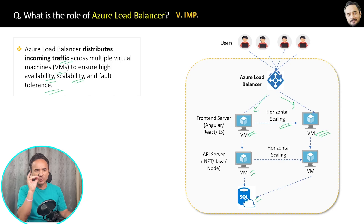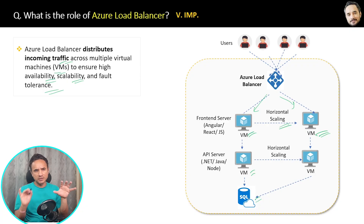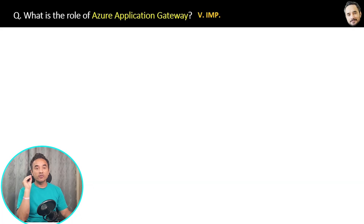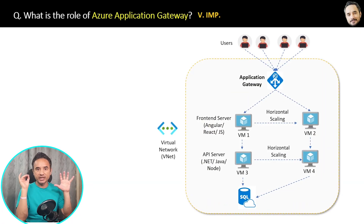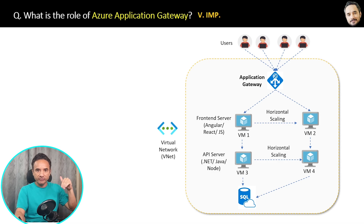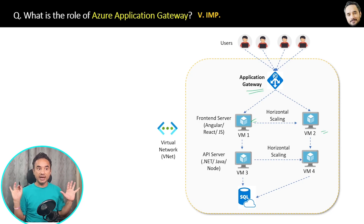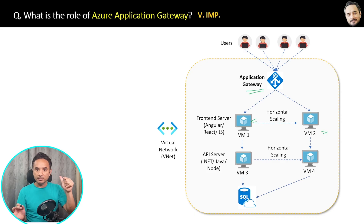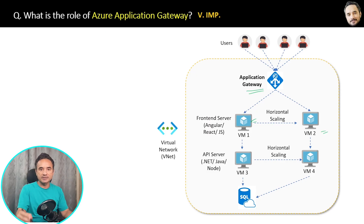There is another concept — Azure Application Gateway — which is very similar to a load balancer. Look at this diagram: Azure Load Balancer evenly distributes incoming requests to virtual machines, and Application Gateway sits at the same position. The difference is that while Load Balancer distributes evenly so no single VM is overloaded, Application Gateway distributes traffic based on rules.